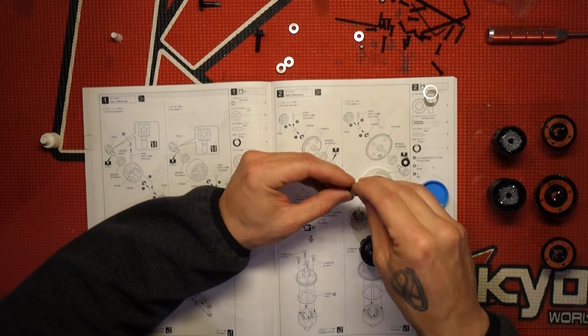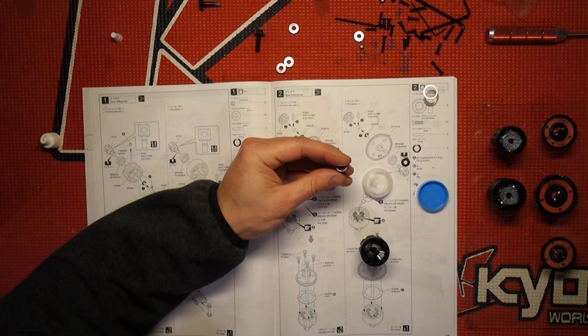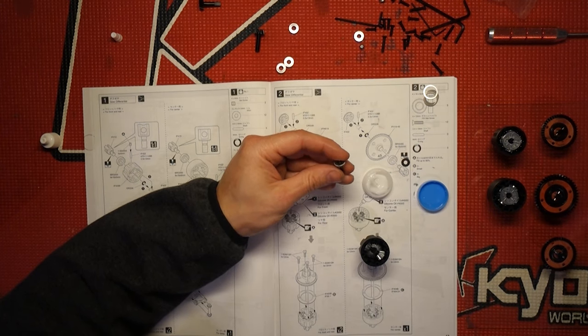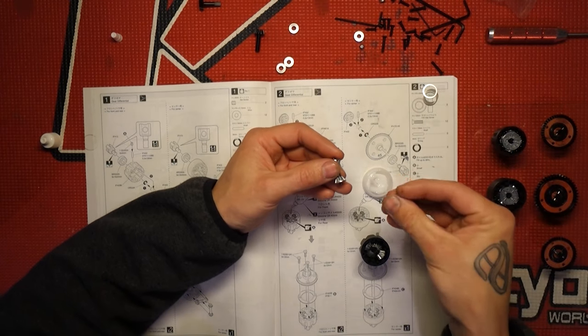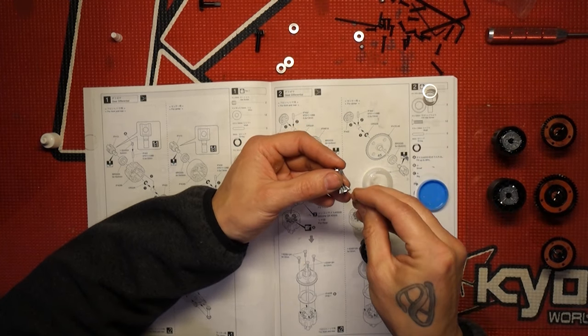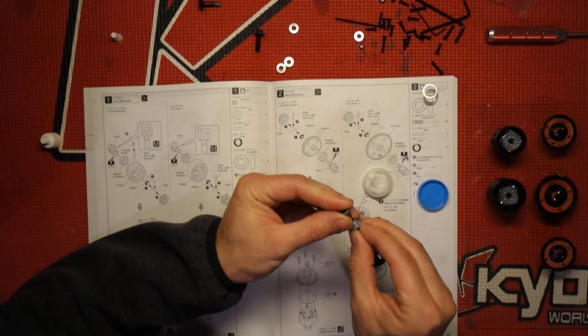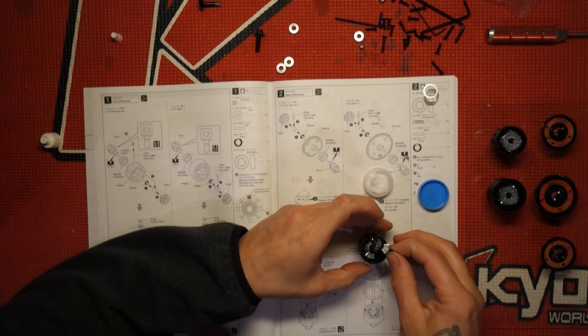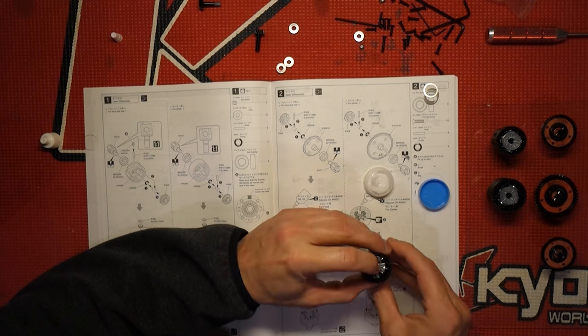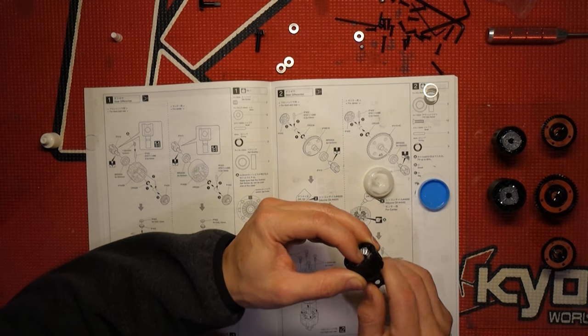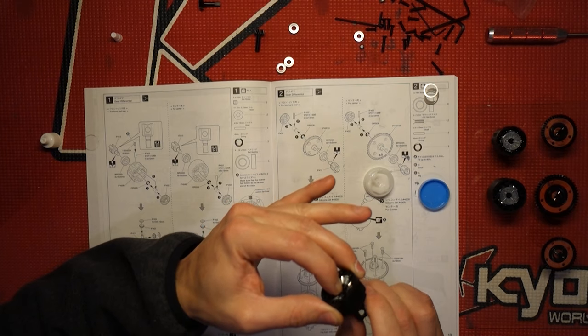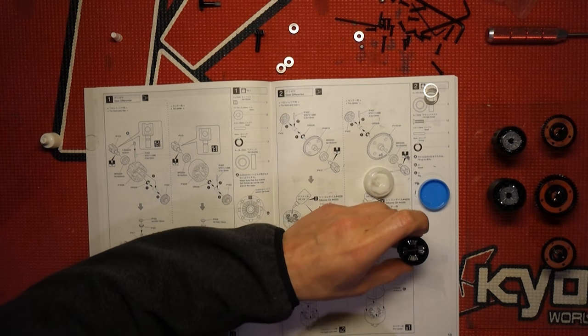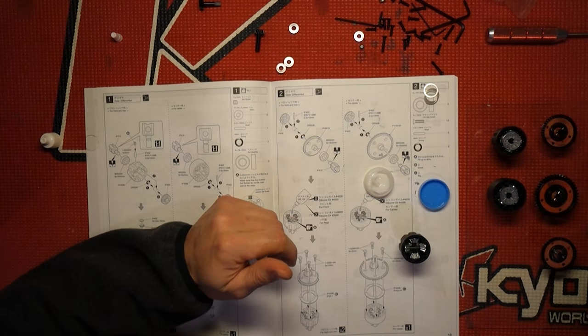Same thing. Smooth side towards the out, towards the diff casing. Then once you get them in there, you kind of hold it down with your finger. Make sure it's turning freely. In our case, it is. That's a great thing.